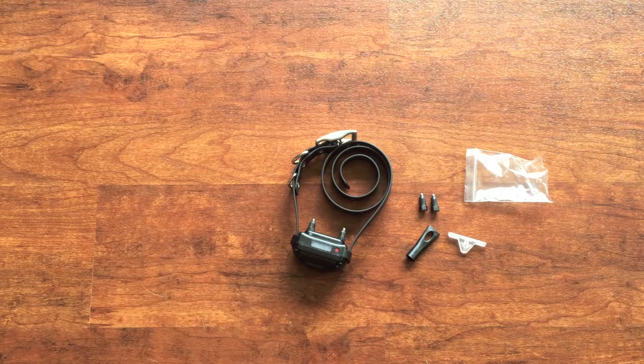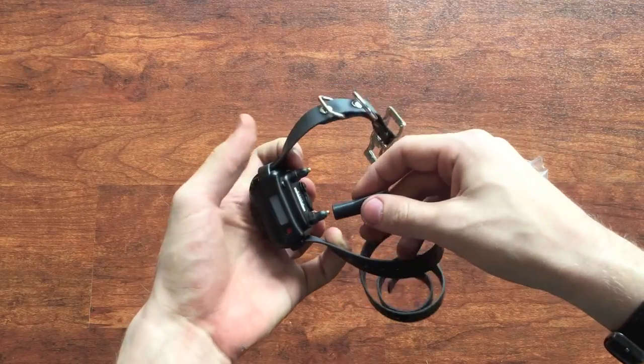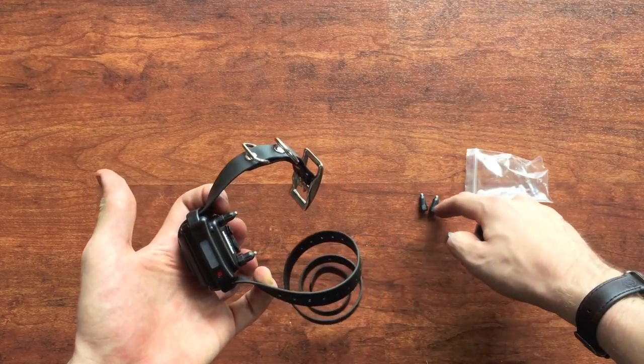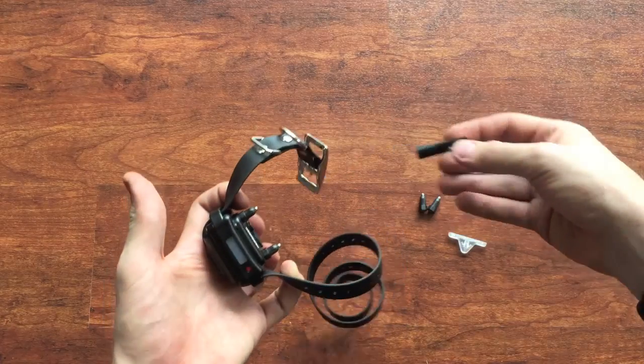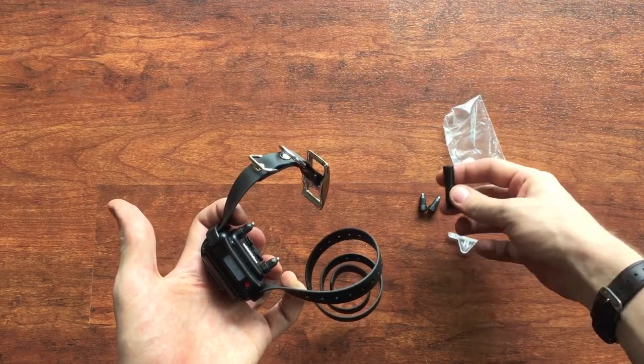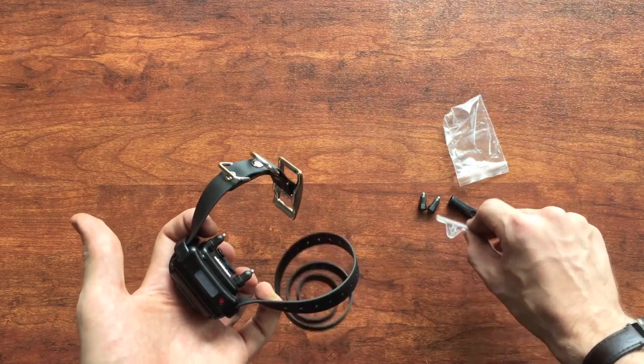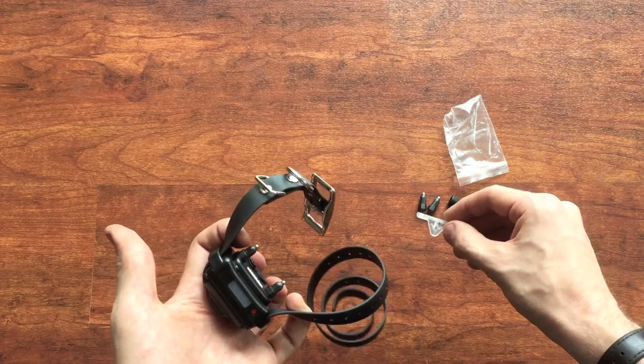But assuming your dog just has fur that's too long for the short haired points but the standard long ones will work fine, they come in this little bag in the box. They come with a tool for taking them on and off the two contact points, and there's also a test light in the bag with them which we won't really need for this.